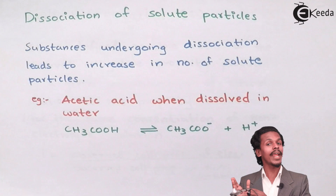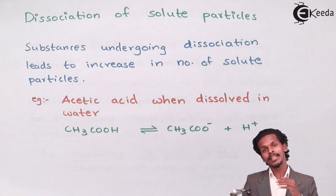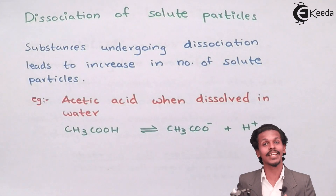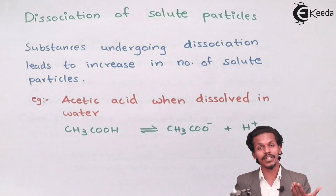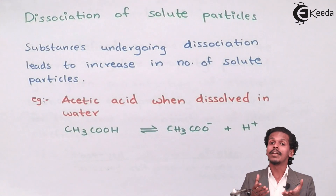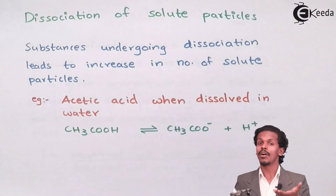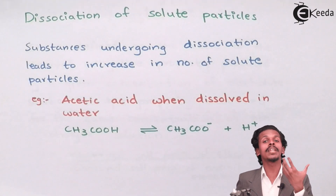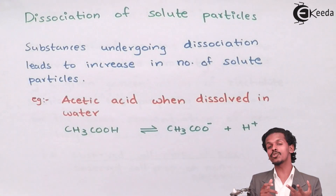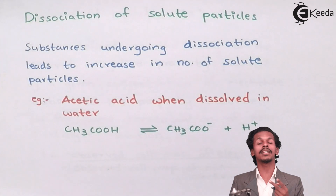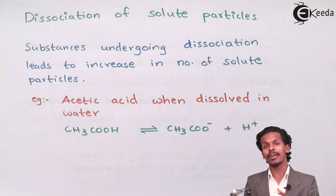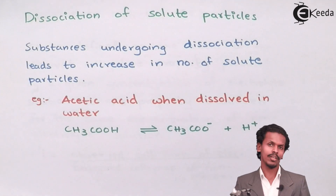Because π = nRT. In this formula, n stands for the number of moles of solute. If the number of moles of solute increases, then obviously the osmotic pressure will also increase during dissociation of the particles. And during association of the particles, the number of moles of solute will decrease, and therefore the osmotic pressure will also decrease. So these two factors — association and dissociation — have an effect on osmotic pressure, or on any colligative property.